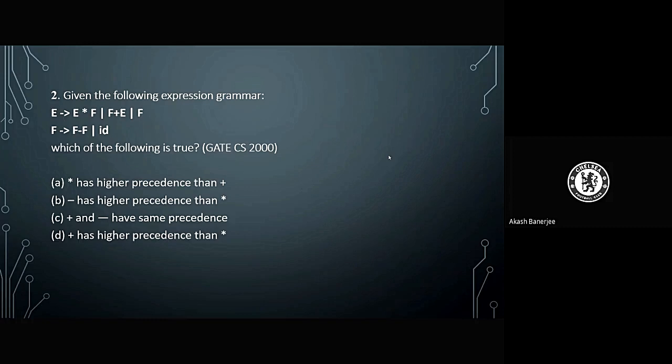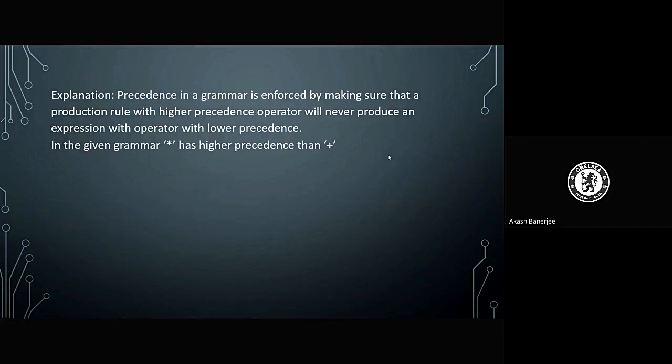The answer is option A. The explanation is precedence is often enforced by making sure that the production rule which has higher precedence operator will never produce an expression with lower precedence. That means if an operator has a higher precedence, that will be operated first with respect to having a lower precedence operator.